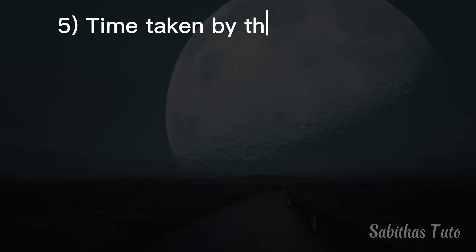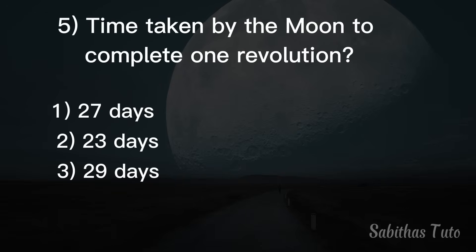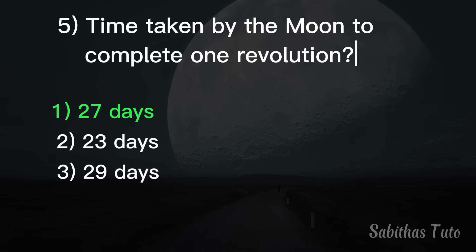Fifth question. What is the time taken by the moon to complete one revolution? The answer is 27 days.